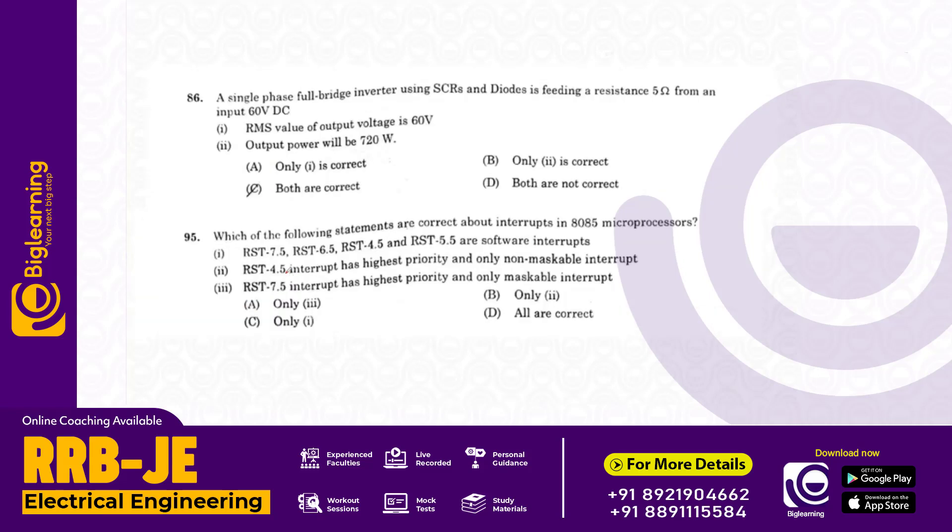A single phase full bridge inverter using SCR and a diode is feeding a resistance of 5 ohms from an input of 60 volt DC. The RMS value of output is 60 volts and power will be 120 watts. Answer C.